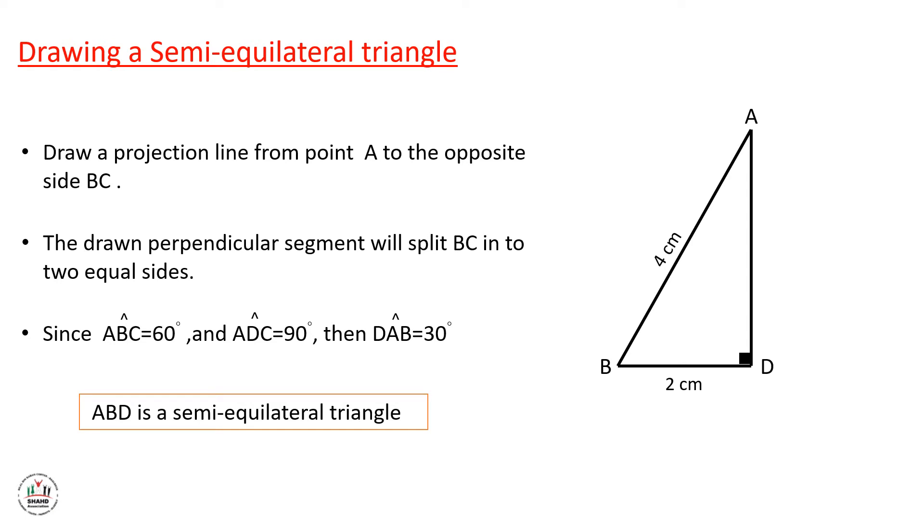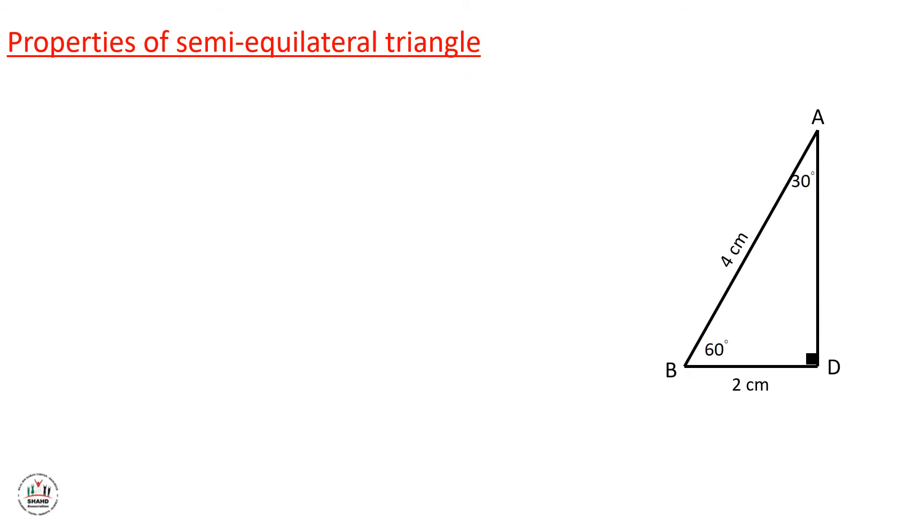So ABD is a semi-equilateral triangle. Now, properties of semi-equilateral triangle. We notice that BD equals AB over 2.